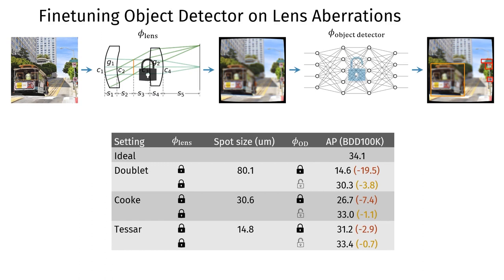Our method allows us to fine-tune the object detector to take the actual aberrations of the lens into account. Doing so, we alleviate most of the drop in object detection performance.